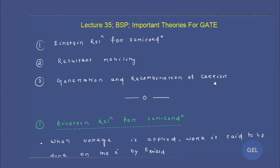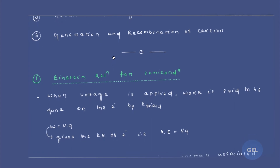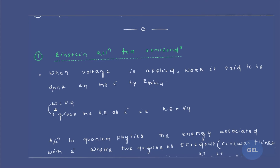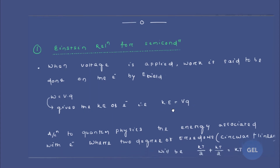Let's start with the Einstein relation for semiconductors. When any voltage is applied, work is done on the electron by the electric field. That work done equals V times Q. This work done is stored inside the electron in the form of kinetic energy. So kinetic energy equals VQ — this is a basic concept from class 12.